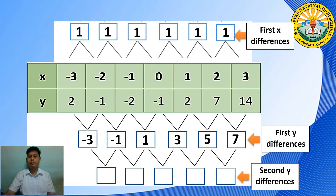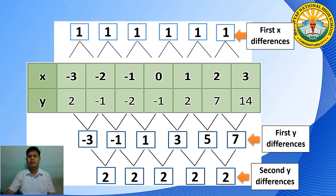Last step is to get the second y differences. That is: 7 minus 5 equals 2, 5 minus 3 equals 2, 3 minus 1 equals 2, 1 minus negative 1 equals 2, and negative 1 minus negative 3 equals 2. Remember that if we have a table of values, it must satisfy that the first differences of x coordinates are equal, and the second differences of y coordinates are also equal. In conclusion, the given table of values is quadratic.